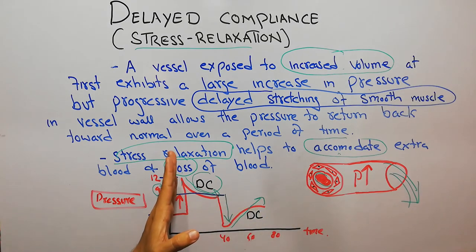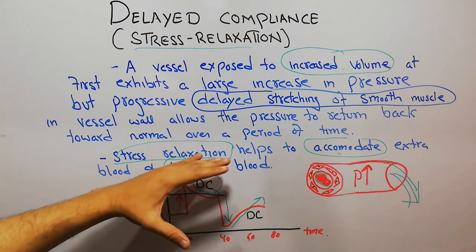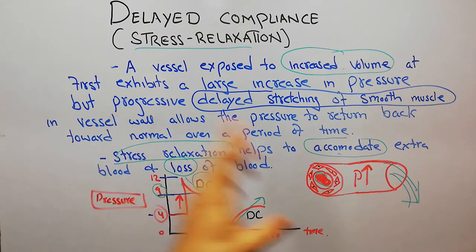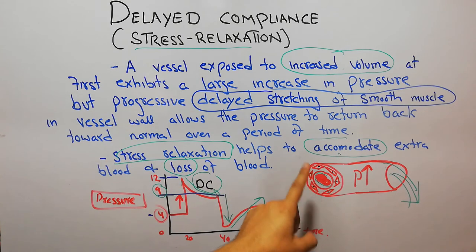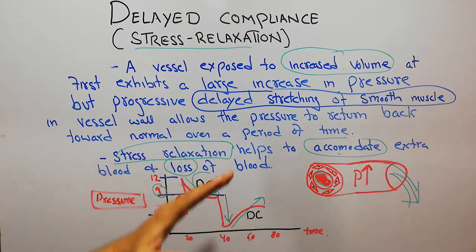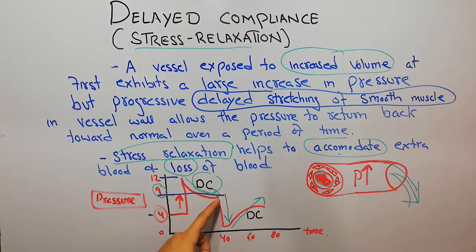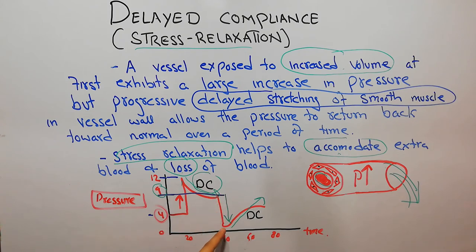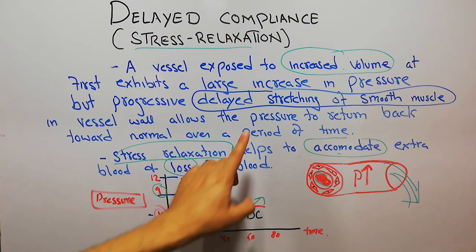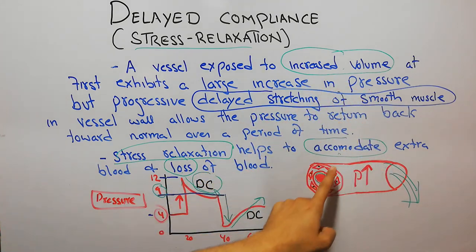To summarize: when a lot of blood is injected into the vessels, the volume increases and initially the pressure increases, but then the pressure decreases gradually without removing the extra blood. Similarly, when a lot of blood has been removed, the pressure suddenly falls but then, without injecting any extra blood, the pressure gradually returns to normal. This is due to the stretching or contraction of the smooth muscles present in the vessel walls.